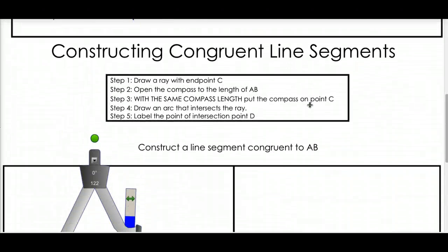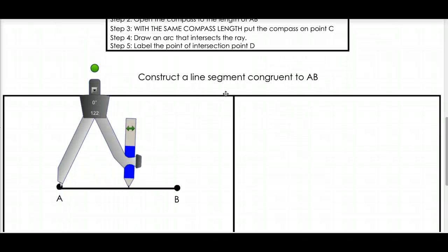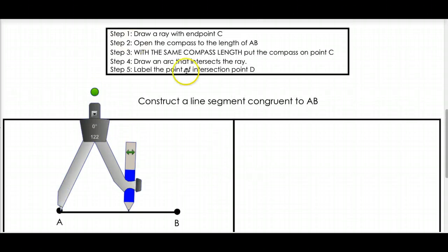So, first thing we're going to do is construct a congruent line segment. Now, given this line segment AB, we want to construct another line segment that's congruent to it. Now, all the steps are right here, you've just got to follow along. So, the first thing you have to do is draw a ray with an endpoint C. Does it matter that we call it C? Nope. And does it matter how long your ray is? Well, it should be bigger than this. It should be bigger than AB, so just draw a big ray.